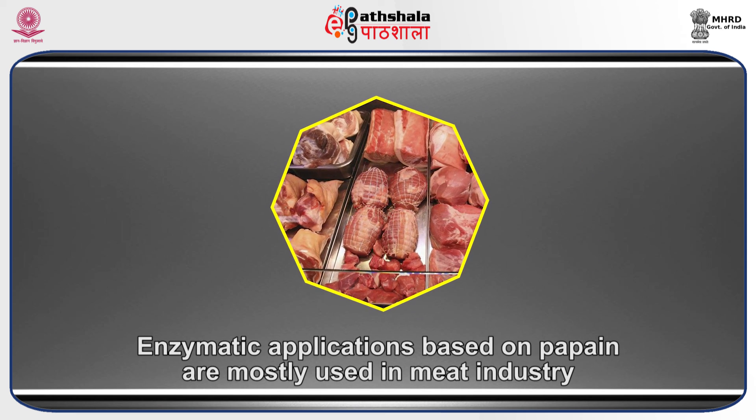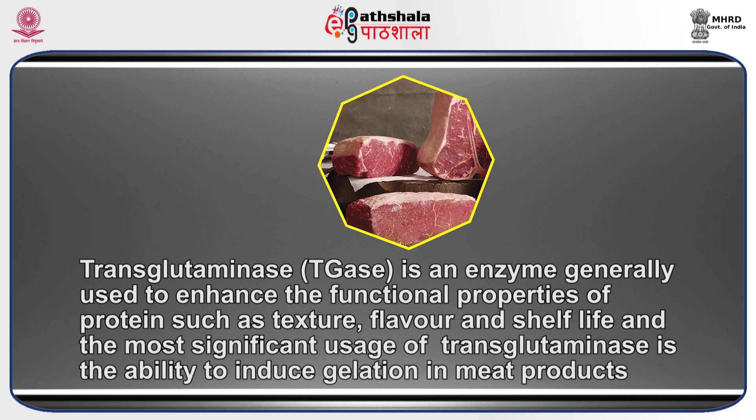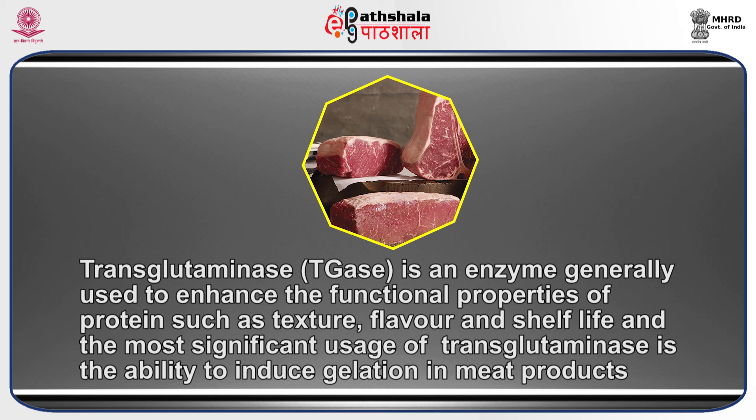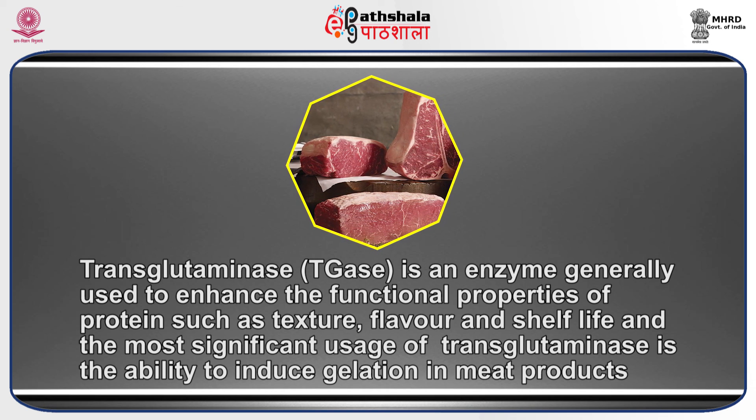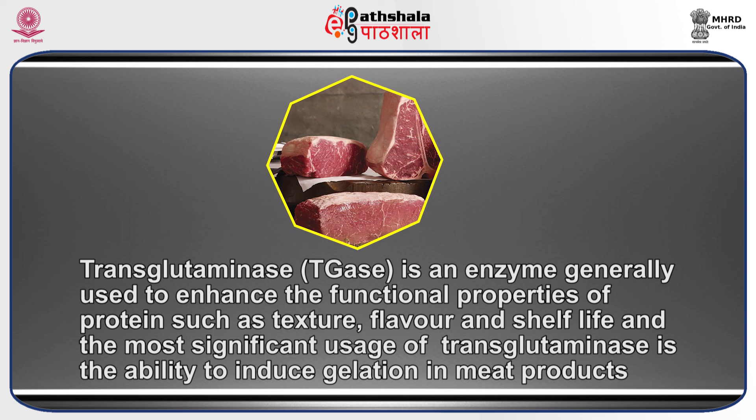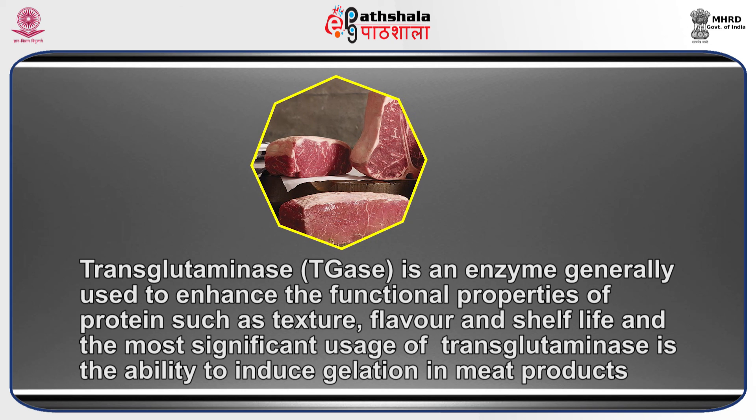Enzymatic applications based on papain are mostly used in the meat industry. Papain is an enzyme from papaya that acts as a catalyst in protein hydrolysis, resulting in the breakdown of tough meat fibers. Bromelain is a group of proteolytic enzymes that degrades myofibrillar proteins and collagen; it is widely present in large quantities in the fruit, leaves, and stems of the Bromeliaceae family, with pineapple being the most familiar. Transglutaminase is an enzyme used to enhance functional properties of protein such as texture, flavor, and shelf life, and its most significant use is its ability to induce gelation in meat products.